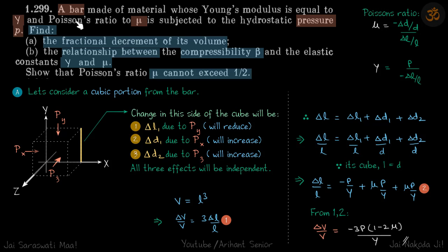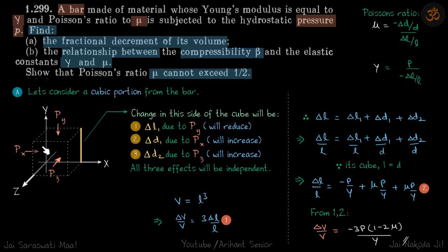The best shape to take is a cubical shape. So from the bar we take one small part that is a cubical shaped part. We'll see why that is useful. Let's consider a cubic portion from the bar.